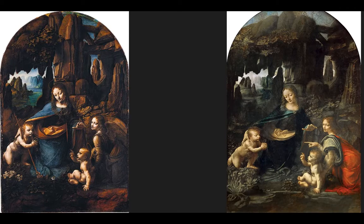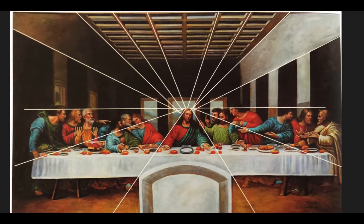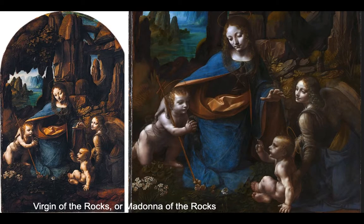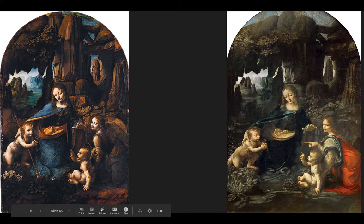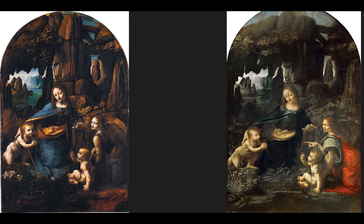Da Vinci took common people and common scenes and made them religious. Even in the Last Supper there's no halo — nothing explicitly signifying divinity. In the Virgin of the Rocks, the setting is an everyday rocky scene, yet it functions as a throne. The still water represents the purity of the Virgin Mary and the blessing of Saint John. The angel — possibly Gabriel — points to John, directing your attention, while Christ makes a blessing gesture.